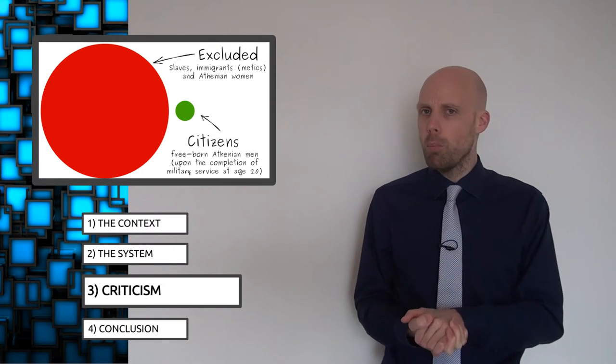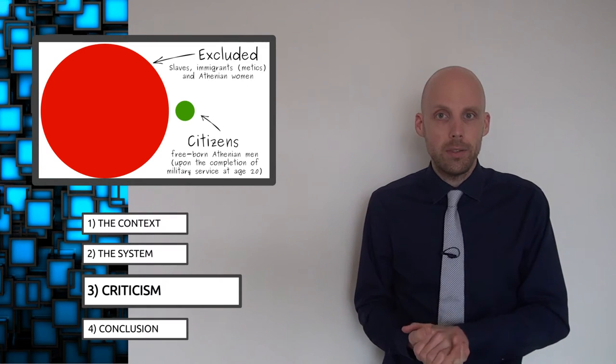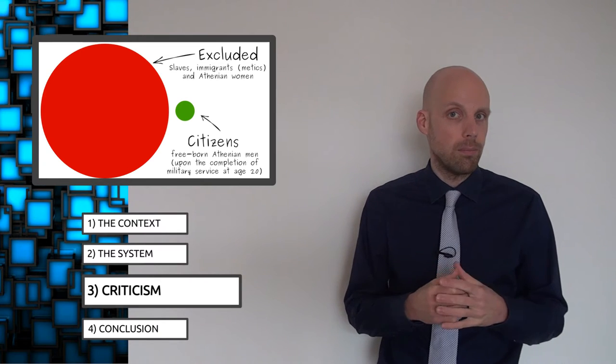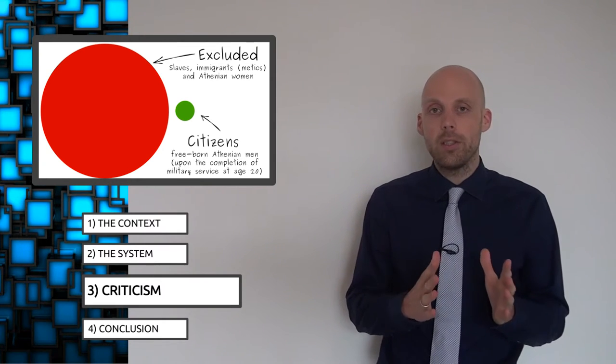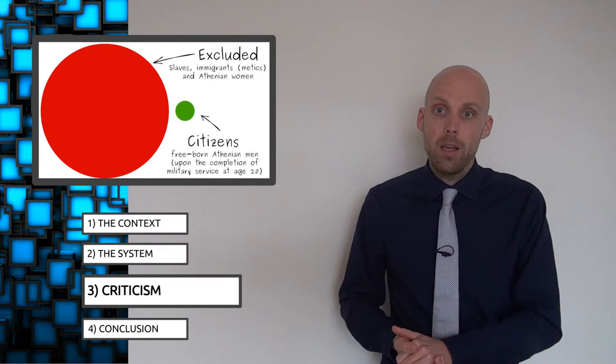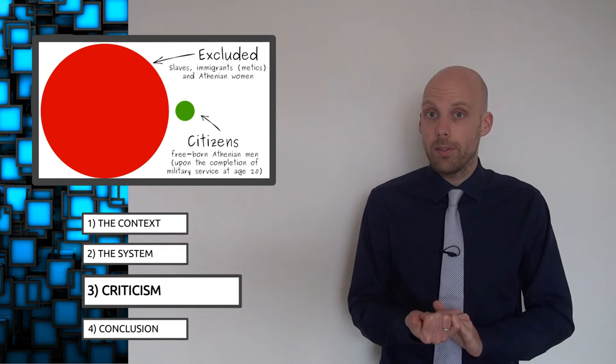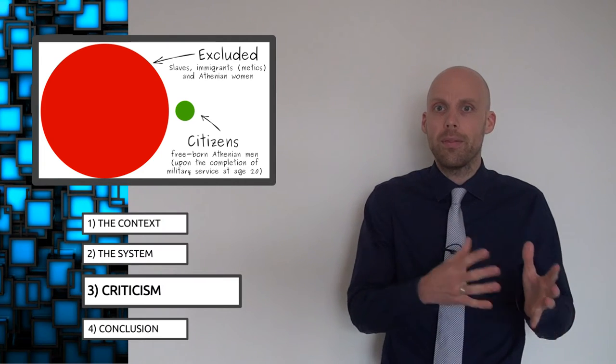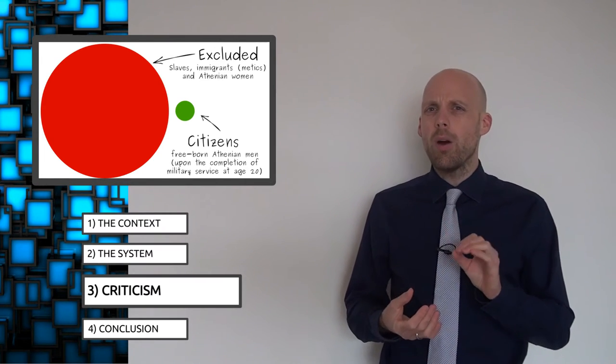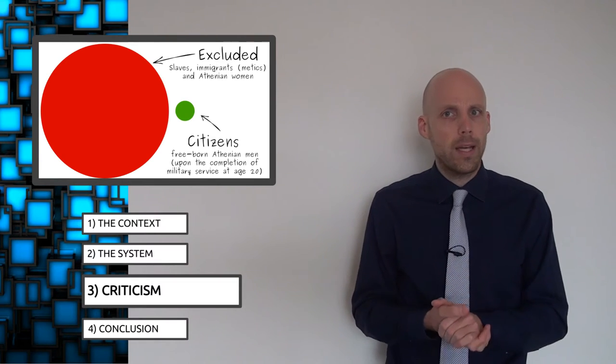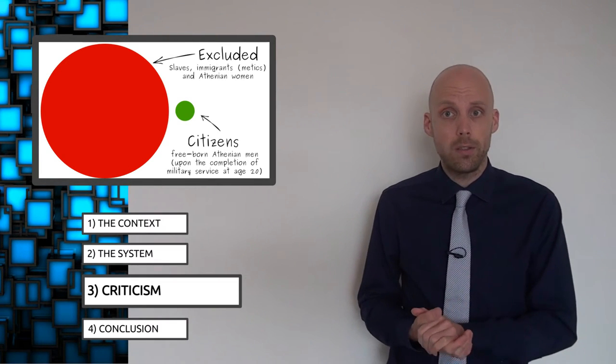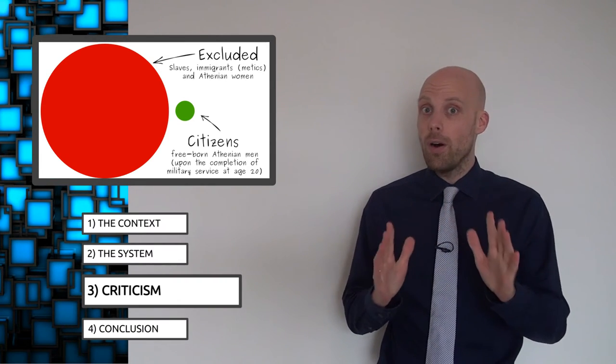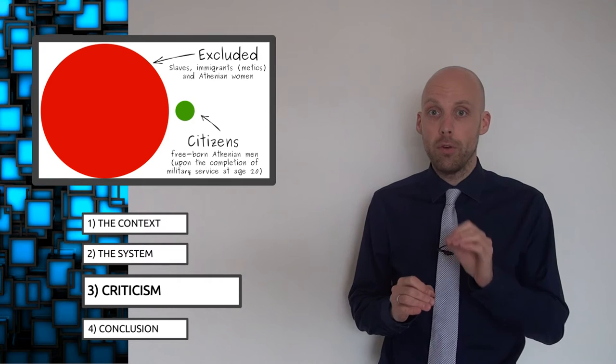Then on to the immigrants or metics as they were known. And here we have to be a bit more critical. Immigrant status was inherited. It was basically impossible for the offspring of an immigrant to become a citizen. Ever. No matter how many generations your family had already lived in Athens. Metics were denied all the benefits of citizenship but shared in all the burdens. They couldn't own property but they still had to pay taxes. This was very harsh even by the standards of the time when we have to fault the Athenians for their rigid exclusion of the metics.